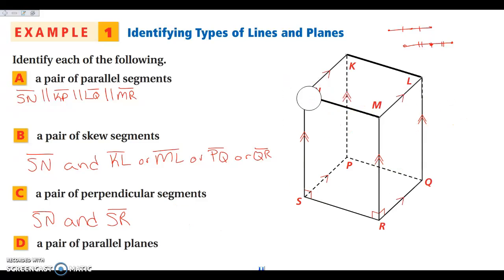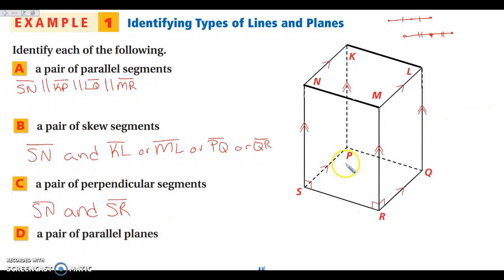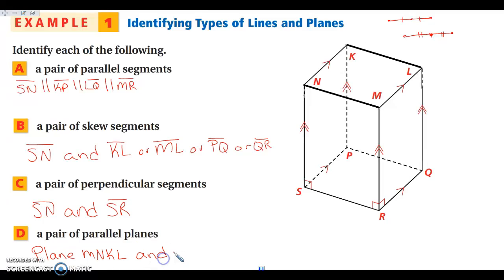For a pair of parallel planes, we're looking at the same idea as before — top and bottom, left and right, or front and back. I'll pick top and bottom: plane MNKL is parallel to plane RSPQ. Those are the two parallel planes.